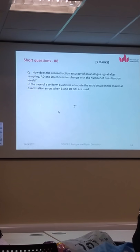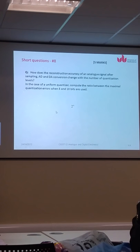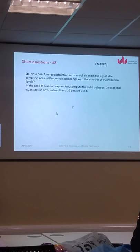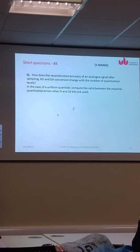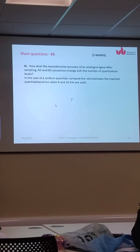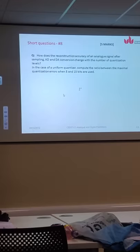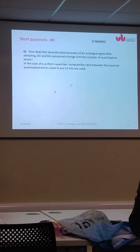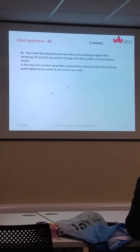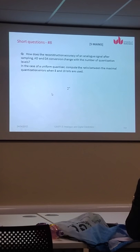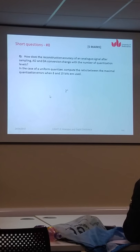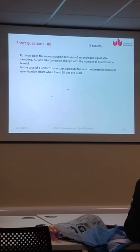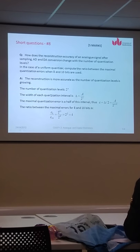And the last short question, about AD conversion and DA conversion. How does the reconstruction accuracy of an analog signal change with the number of quantization levels? Accuracy is becoming better, so accuracy is growing with more quantization levels. That's the answer. And then, if you remember, one of the pages in that AD-DA conversion was talking about accuracy and precision. So the maximum error, actually, of accuracy. If you have a uniform quantizer, compute the ratio between the maximum quantization errors for 8 and 10 bits. AD converter is determined by the number of bits. We have two quantizers here. One is using 8 bits, the other is using 10 bits. What is the ratio between the maximum quantization errors in these two cases?